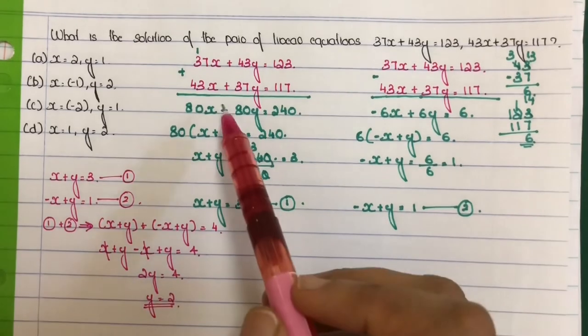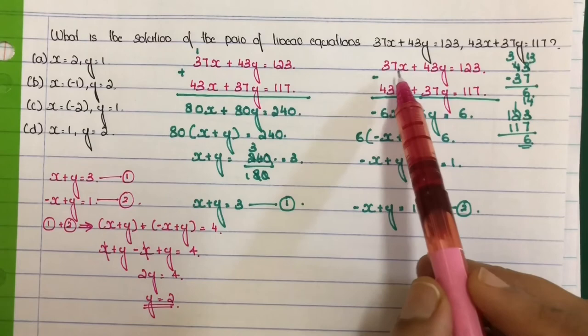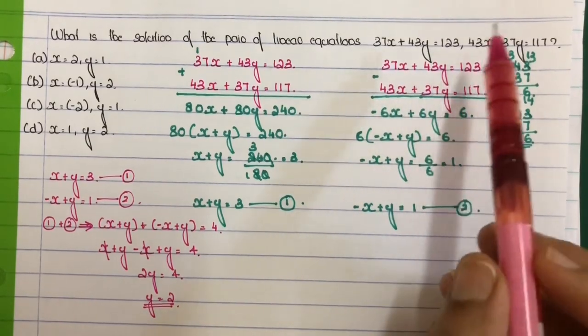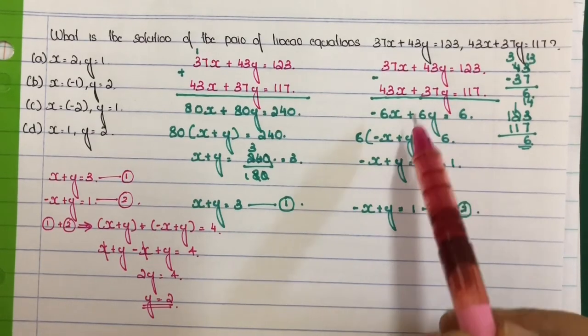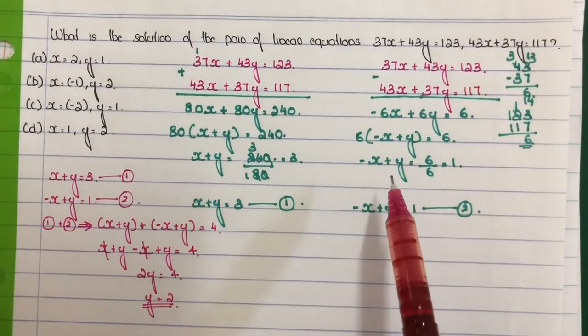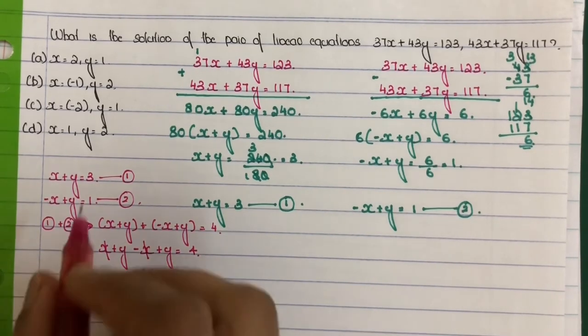If there's any confusion, you can follow this step. But in addition or subtraction problems, if there's confusion, you can also do 37x plus 43y minus the entire second equation in brackets: 43x plus 37y.